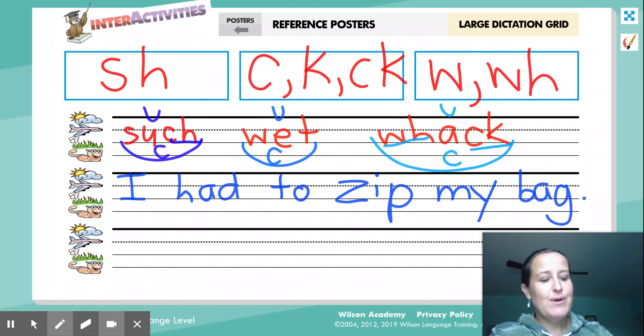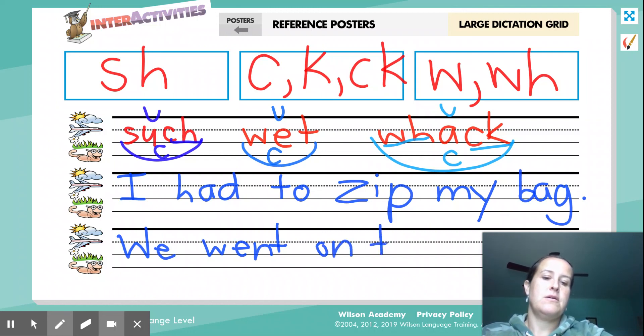All right, so we'll do one more sentence on the bottom. We went on the path. Echo. We went on the path. Good job. So now, we went on the path.